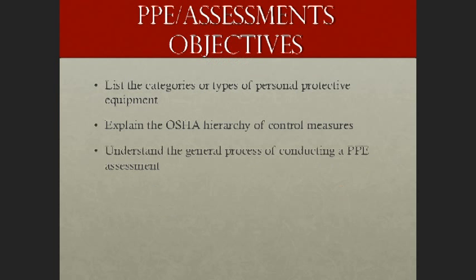Let's discuss the PPE and assessment objectives. There are three prime objectives I want you to be able to accomplish as we move through this course. First, I want you to be able to list the categories or types of Personal Protective Equipment. Second, I'd like you to explain the OSHA hierarchy of control measures. And lastly, I want you to understand the general process of conducting a Personal Protective Equipment assessment.